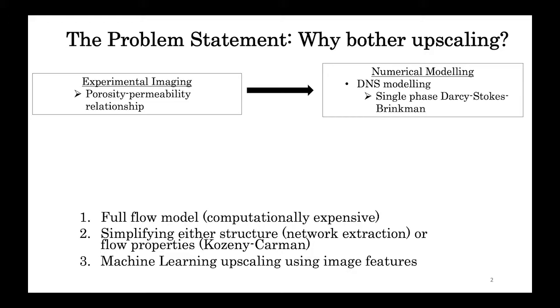Or two, you can find some way of simplifying either the structure via network models or the porosity permeability relationship using Kozeny-Karman so that it can be modeled at a larger scale, but in the process losing both complexity and accuracy.